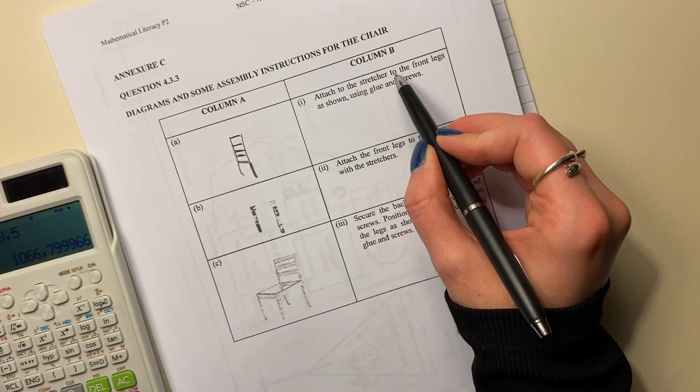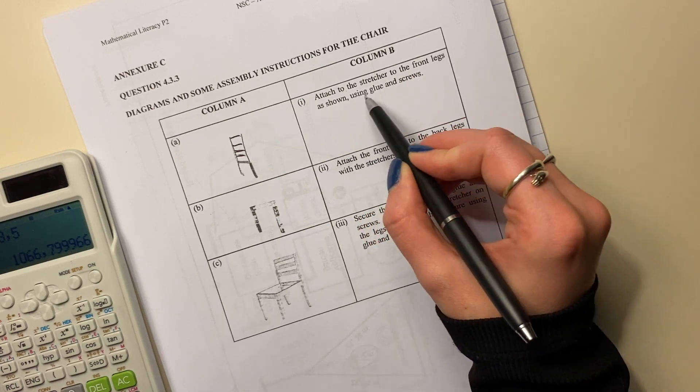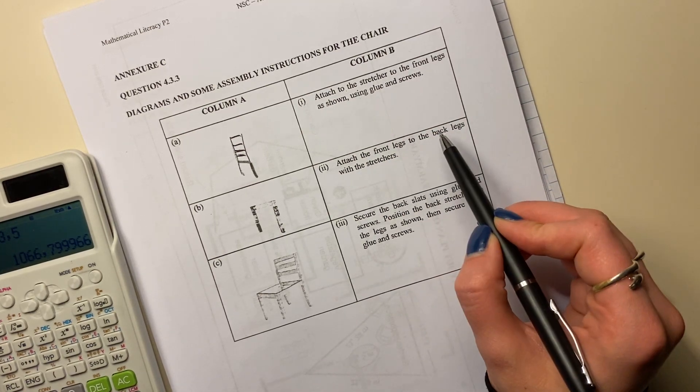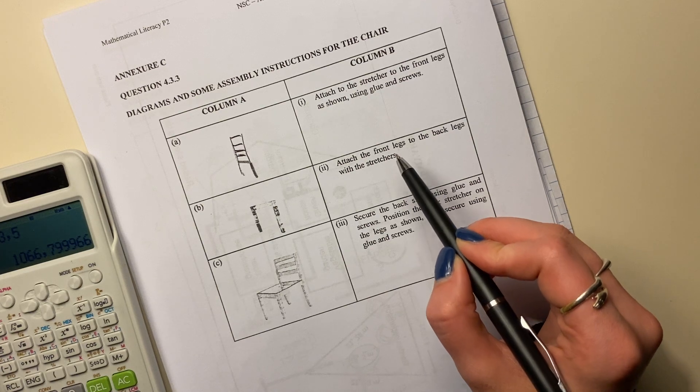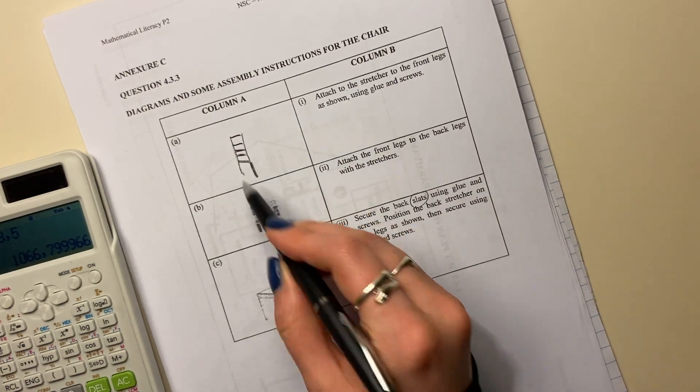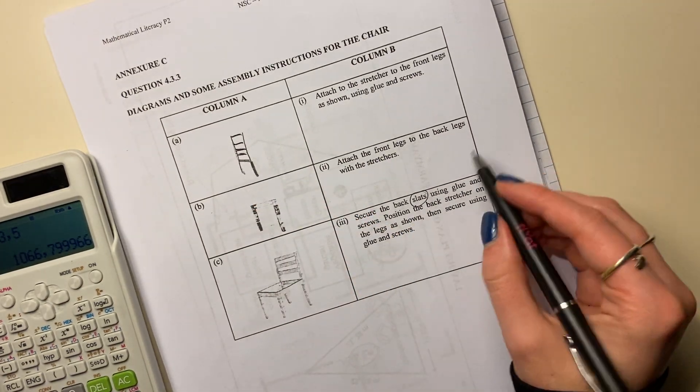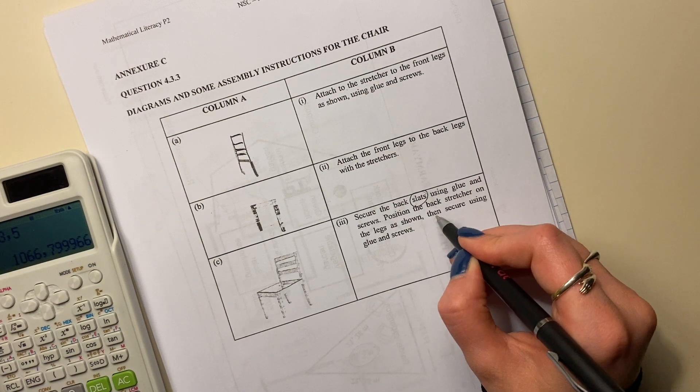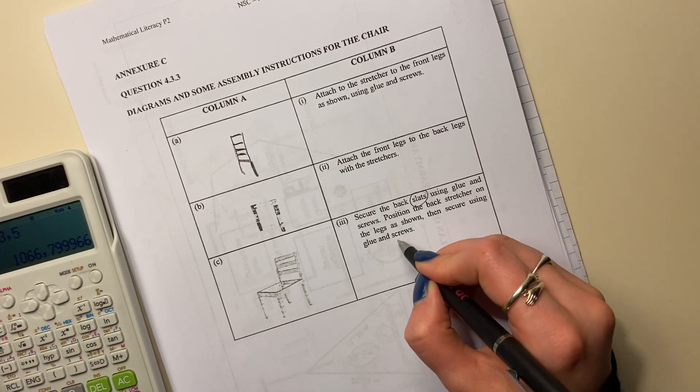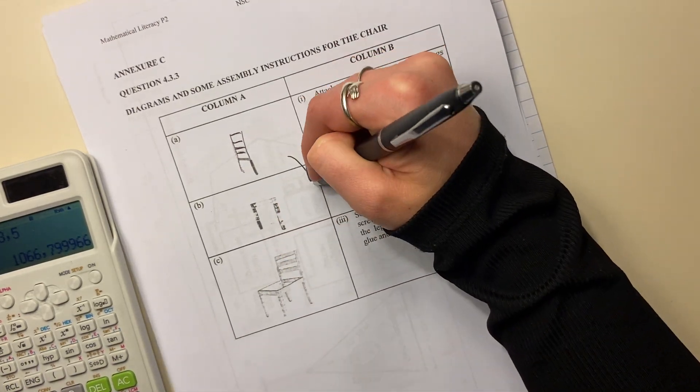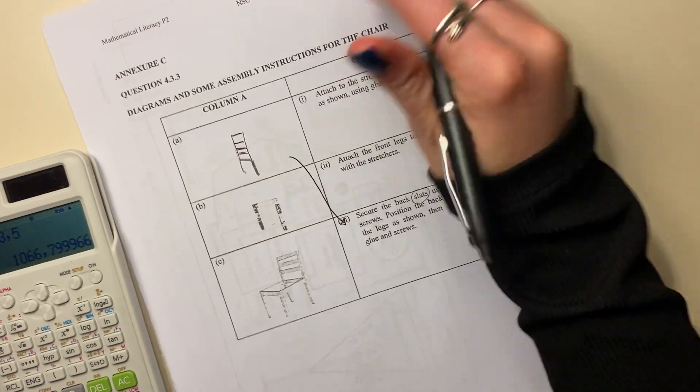Let's read through this. Attached to the stretcher, to the front legs as shown using glue and screws. Don't know what that means. Attached the front legs to the back legs with the sketches. Then it says secure the back slats. Slats, probably looking at one of those two. There's no slats in that one. So we're kind of getting there. Using glue and screws. Position the back stretcher on the legs as shown, then secure using glue and screws. So here it's not talking about any other of the legs, so it's probably here. So those ones is connected to that one. This is like a process of elimination. We can always scratch it out, but we're going to say that.